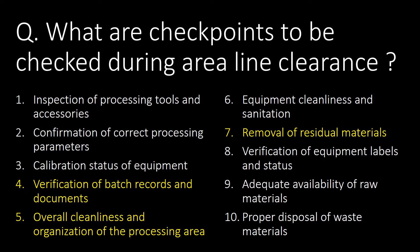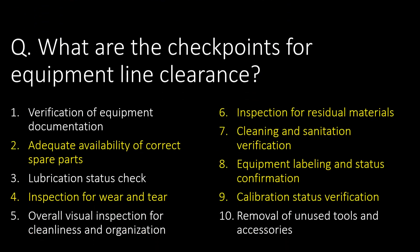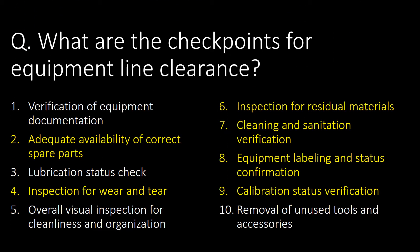What are the checkpoints for equipment line clearance? Here are 10 important checkpoints, including: adequate availability of correct spare parts, inspection of wear and tear of equipment, inspection of residual materials, cleaning and sanitation verification, equipment labeling and status confirmation, and equipment calibration status verification.